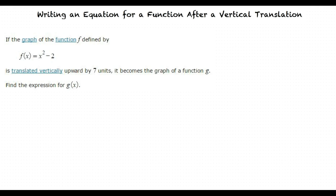Let's try an example. In this example, we are being asked to find the new expression, g(x), when the original graph of the function f, defined as f(x) = x² - 2, is translated vertically upwards by 7 units.